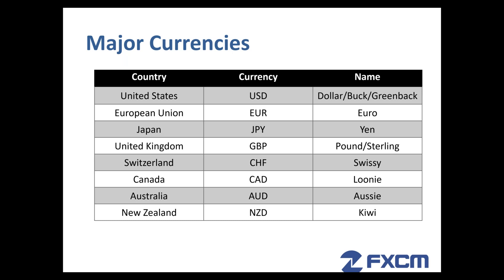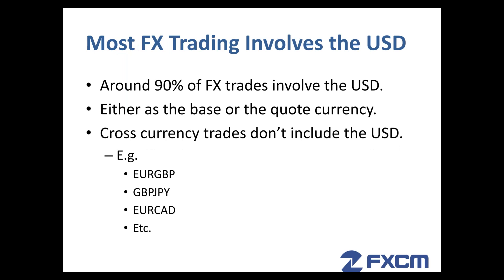Take a look at this table. You can see that the currency USD is called the dollar, the buck or the greenback. EUR is the euro. JPY is the yen. GBP is the pound or sterling. CHF is the Swiss franc, commonly referred to as the Swissie. CAD is the Canadian dollar, which is commonly referred to as the loonie — that's because the dollar coin has a picture of the loon bird on it. AUD, the Australian dollar, is called the Aussie. And of course NZD, the New Zealand dollar, is called the Kiwi.